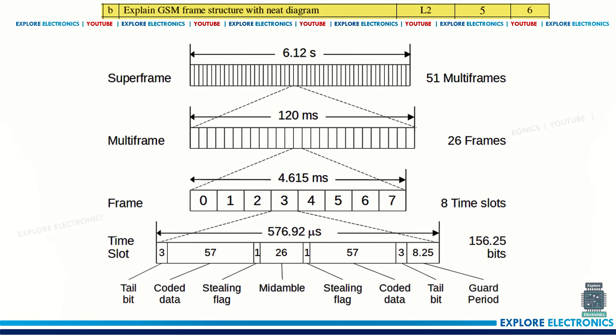Explain GSM frame structure with a neat diagram. This is the frame structure of GSM — a very important question that may be asked in the examination. It is categorized as a super frame, which consists of multi-frames. Each multi-frame has 26 frames, each single frame consists of eight time slots, and one time slot consists of approximately 156 bits, with each bit's purpose explained.